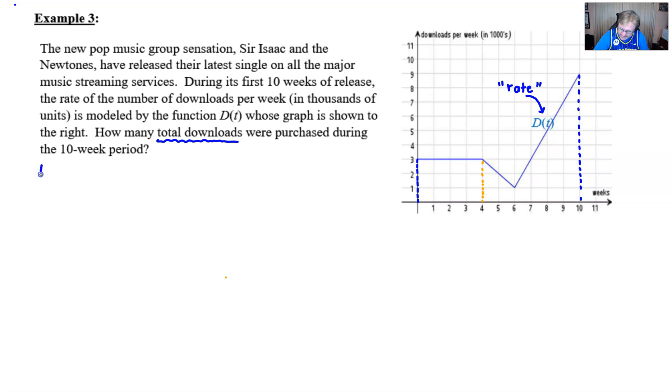That's perfectly fine. Then you could just simply say the area on the interval zero to four, just to keep track of this, is simply the area of the rectangle that's four by three, which in this case would be 12. You can make a statement that during the first four weeks, we experienced 12,000 downloads, or at least Sir Isaac and the Newtones witnessed 12,000 downloads of their new smash hit single.